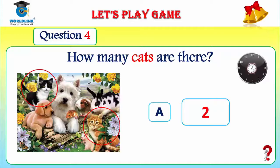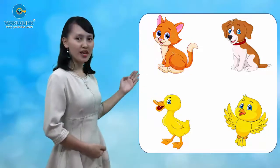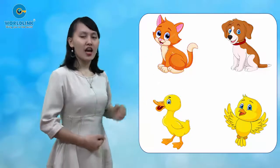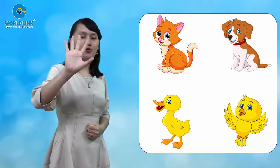Congratulations! You played the game very well. It is such a funny and interesting game, right? I have one more challenge for you. You will see the picture for five seconds. After that I will cover the pictures, and you have to find out where the animals are. We have four animals here: cat, dog, duck, and bird. You have five seconds to remember.